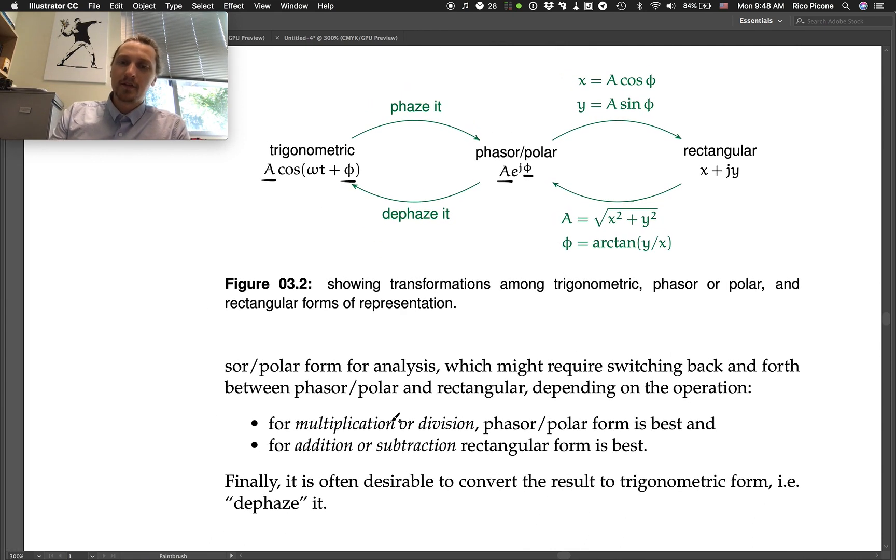For multiplication or division, remember, we want to be in this phasor or polar form. For addition and subtraction, we want to be in rectangular form. So, you're going to bop back and forth between these, oftentimes, when you're doing a problem, so that you can more easily combine these complex representations.